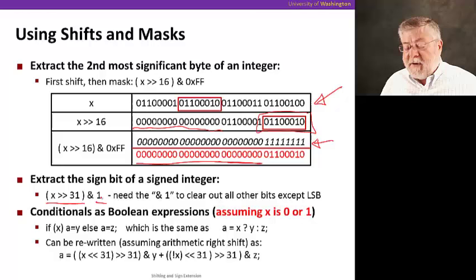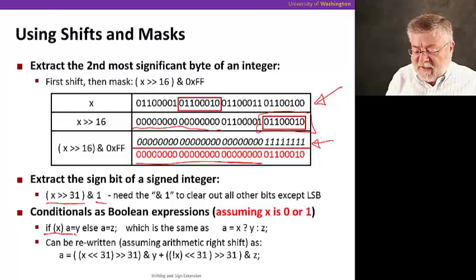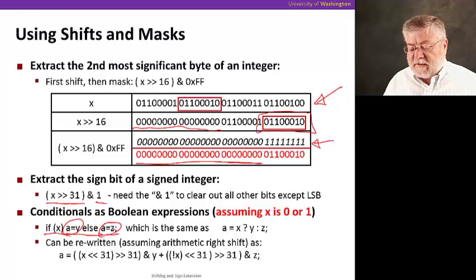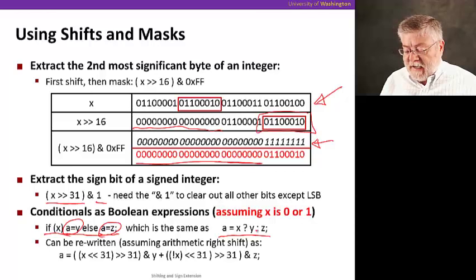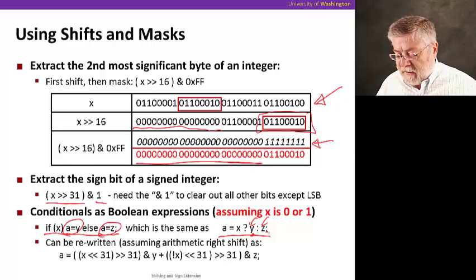We can also do conditionals as Boolean expressions. Let's assume that the Boolean value is either 0 or 1 for now, not anything else. In C I can do a conditional with an if statement. I can write if x, meaning if x is true, then assign the value of y to a, and if x is false, the else clause assign the value of z to a. In C I can also write it in this notation, using a question mark, so that I can fit it all into an assignment statement. This says a is equal to either y or z, depending on the value of x. If x is a 1, it'll be the value y. If x is 0, it'll be the value z. And we use that question mark and colon to delineate those.